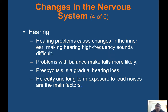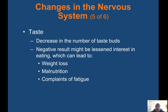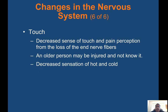Hearing problems can cause changes in the inner ear, making hearing high-frequency sounds difficult. Problems with balance make falls more likely. Presbycusis is a gradual hearing loss; heredity and long-term exposure to loud noises are the main factors. Taste: as you get older, there is a decrease in the number of taste buds. A negative result might be lessened interest in eating, leading to weight loss, malnutrition, and complaints of fatigue. Touch: decreased sense of touch and pain perception result from loss of end nerve fibers. An older person may be injured and not know it, with decreased sensation of hot and cold.